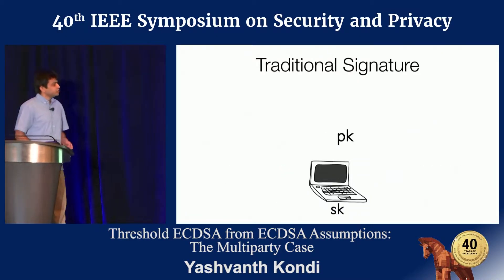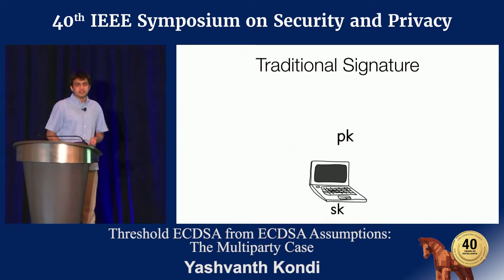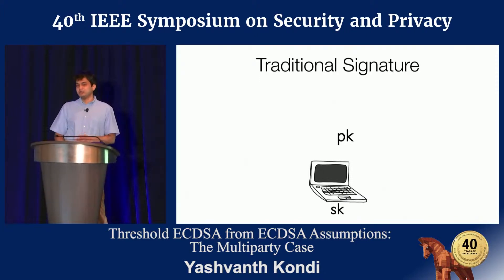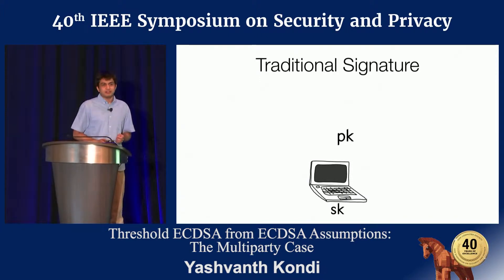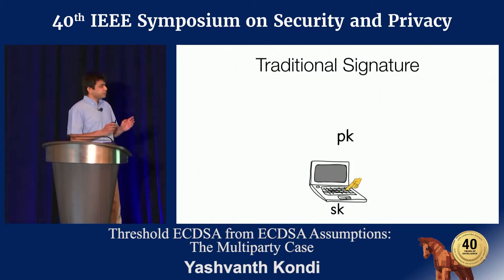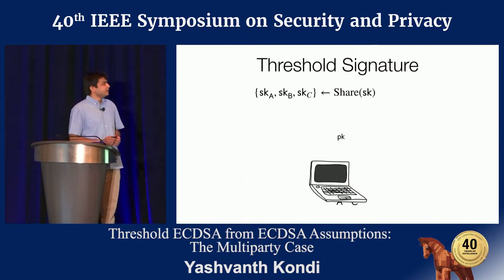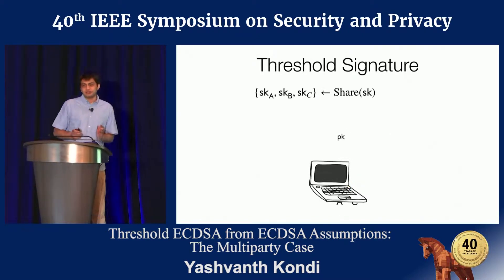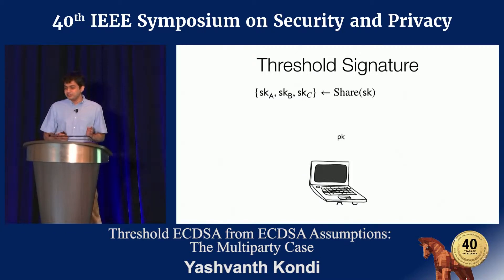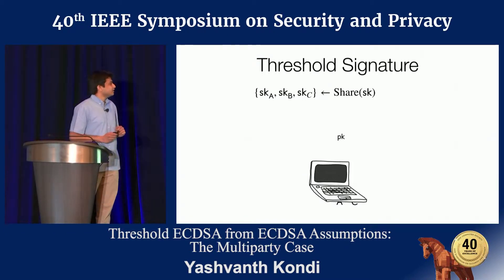In traditional use of a signature scheme, the signing key lives on a single device. And pushing a button on this device is sufficient to produce a signature under the public key. In the threshold setting, we split the signing key into a number of different fragments — we call them SKA, SKB, SKC.